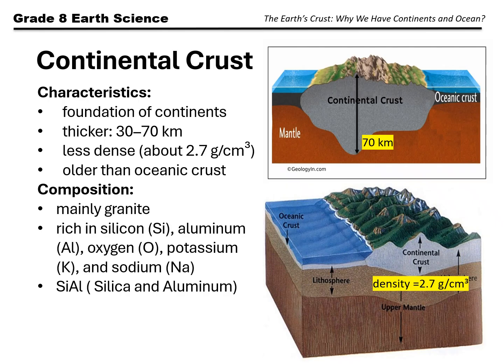The continental crust is lighter or less dense than the oceanic crust. Because it is less dense, it floats higher on the mantle, which allows continents to stand above the oceans, creating the visible land surface of Earth.